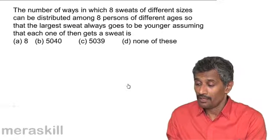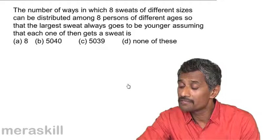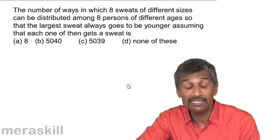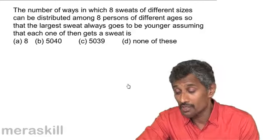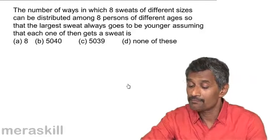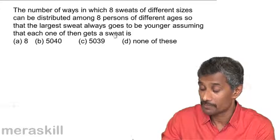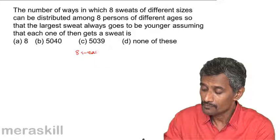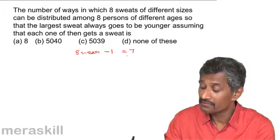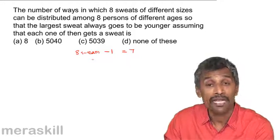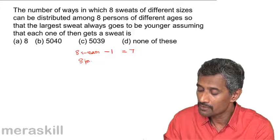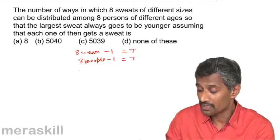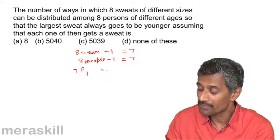Now consider this example: find the number of ways in which 8 sweats of different sizes can be distributed among 8 persons of different ages, such that the largest sweat always goes to the youngest person. Since the sweats are of different sizes, this is clearly a permutation problem. The largest sweat has already been assigned to the youngest person, so only 7 sweats remain, and they must be distributed among the remaining 7 people.